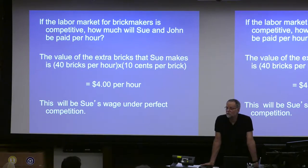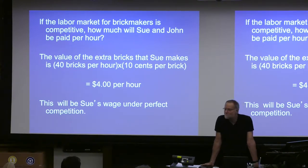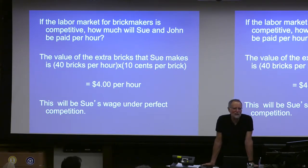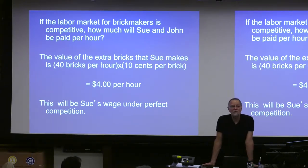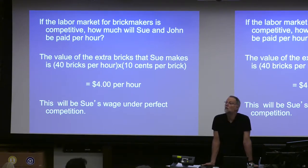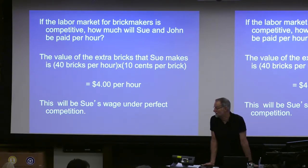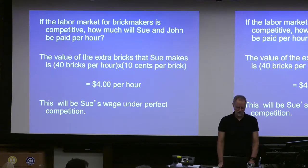That doesn't mean that the competitive firm wants to pay her $4. They'd be happy to pay her $3.50. But if they paid her $3.50, there would be cash on the table. That means some other firm could come along and say, 'Come work for us, I'll pay you $3.60,' and they would make $0.40 an hour of economic profit without bringing anything to the table. The firm employing her at $4 an hour isn't making any economic profit, but that's not so disappointing because it's not doing anything — it's not adding any value. The worker adds all the value.